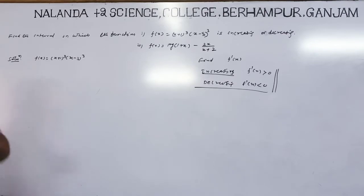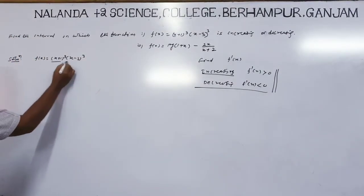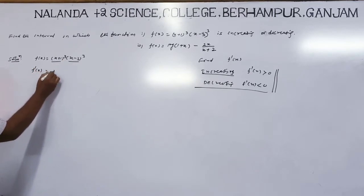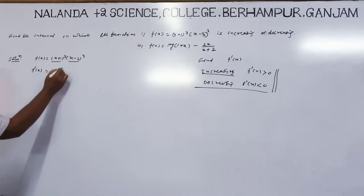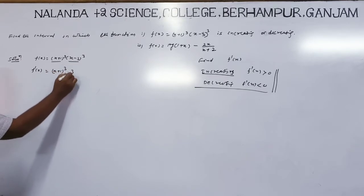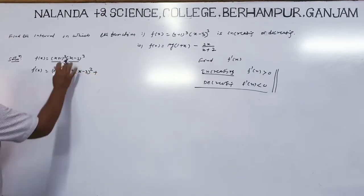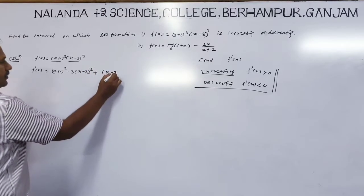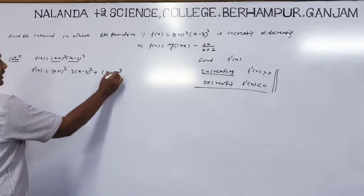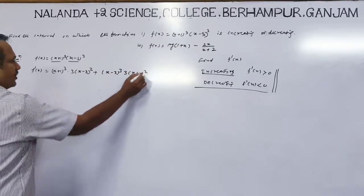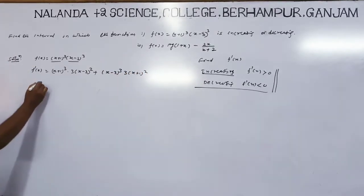First, find the derivative. The derivative of a product u·v: f'(x) equals u times the derivative of v, which is 3(x-3)² times the derivative of (x-3).